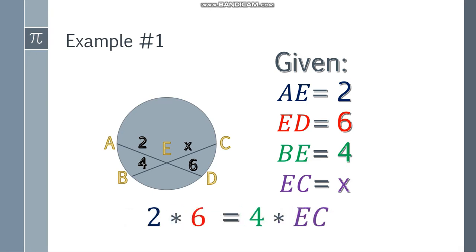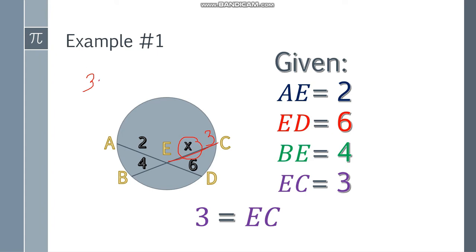So simplify: 2 times 6, that will be 12, and equals 4 times EC. Divide both sides by 4, and you will get an answer of 3. So the value of X is 3. This segment is 3. So check: we have BE times EC, 3 times 4, is equal to 2 times 6. So 3 times 4 is 12, and 2 times 6 is 12. Yes. Next.